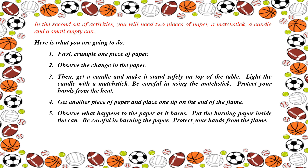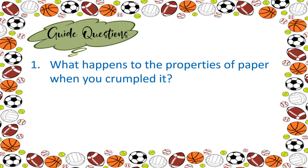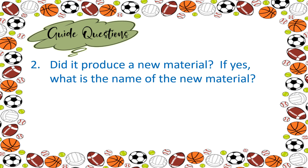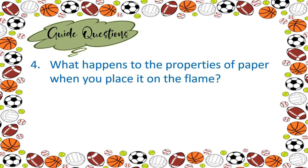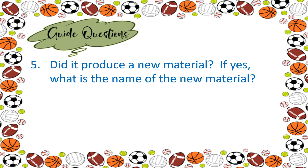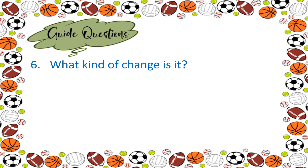Here are the guide questions for the second set. First, what happens to the properties of paper when you crumple it? Second, did it produce a new material? If yes, what is the name of the new material? Third, what kind of change is it? Number 4, what happens to the properties of paper when you place it on the flame? Number 5, did it produce a new material? If yes, what is the name of the new material? Number 6, what kind of change is it?